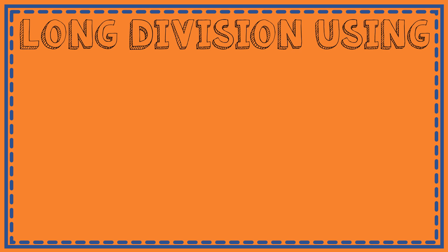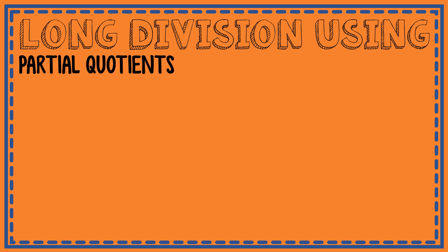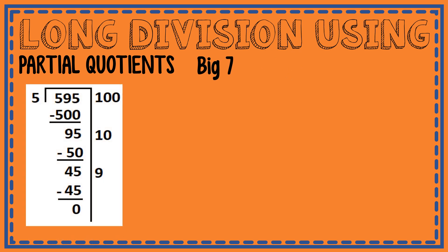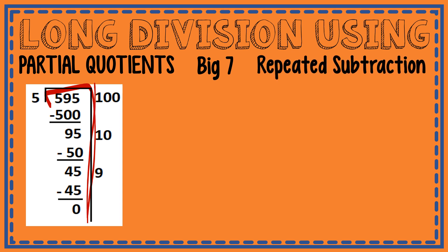Now I'm going to talk about partial quotients and the representation called the Big Seven, which you can use to solve long division using partial quotients. The model looks like this: it looks like a seven — you extend the right side of the division symbol. When you use the Big Seven or partial quotients to divide, what you're really doing is using repeated subtraction — you keep subtracting over and over again until you get to zero.